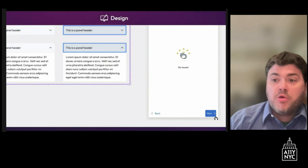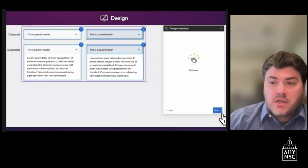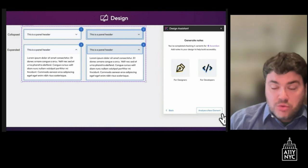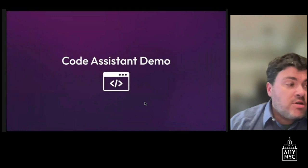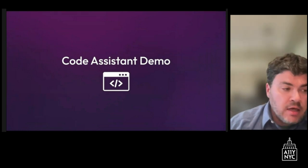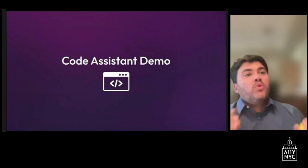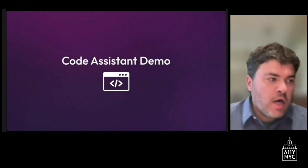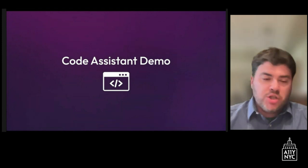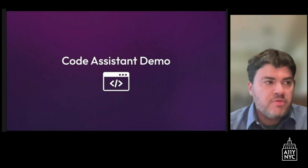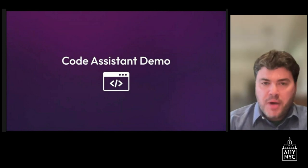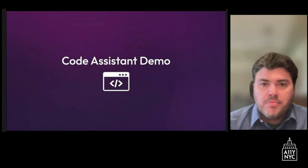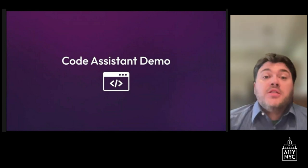Once the component is analyzed and identified as an accordion pattern, we analyze the current states. In this case there's a default collapsed state and a default expanded state, but we're missing the required focus states. So the next task is to create copies and add the focus states — fulfilling the requirements for the accessibility label. We can then scan for color contrast, text spacing, and provide information to developers on how to develop it accessibly.